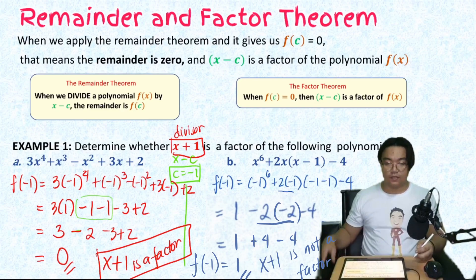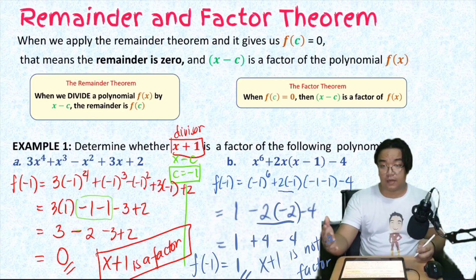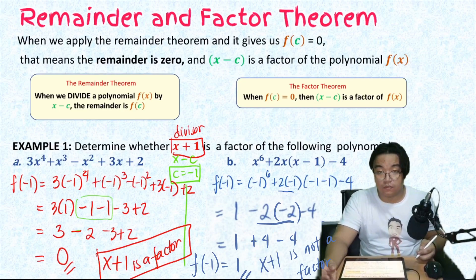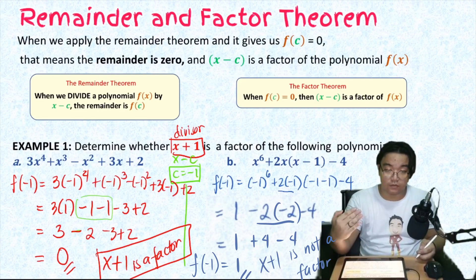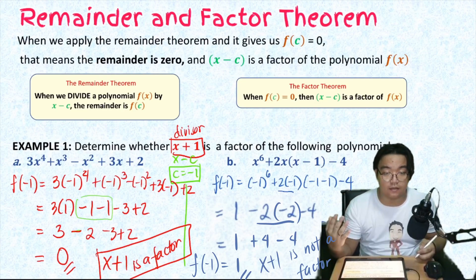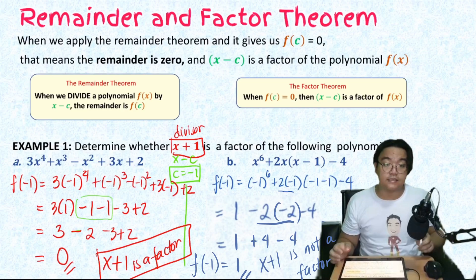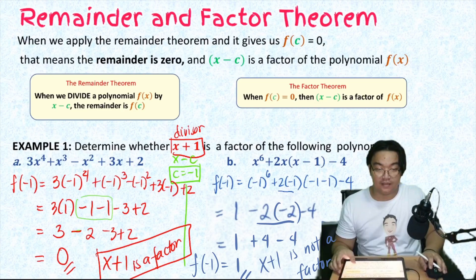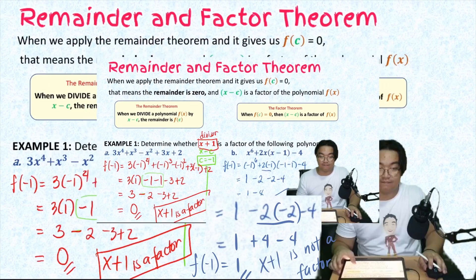So the remainder theorem can be applied to get the remainder, and if the remainder is zero we go to the factor theorem, which means that divisor is a factor. Let's have more examples.